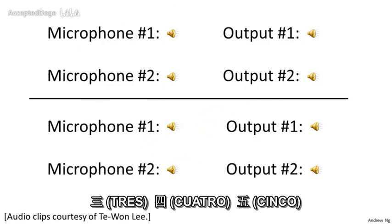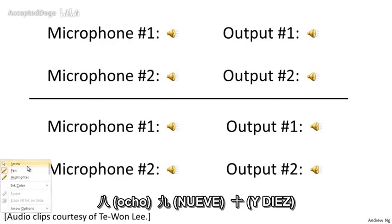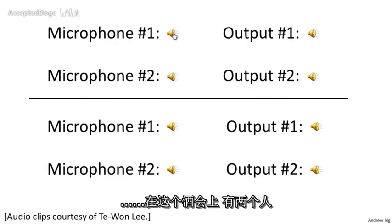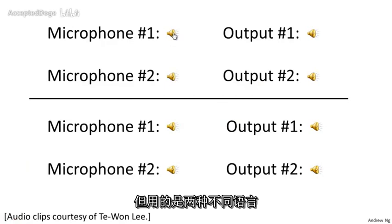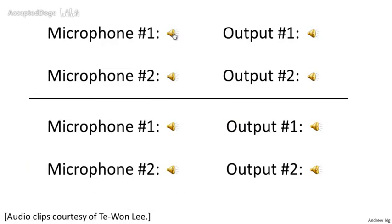Here's an actual recording of two speakers recorded by a researcher. The first microphone captures a mix — one speaker counting in English: one, two, three, four, five, six, seven, eight, nine, ten.